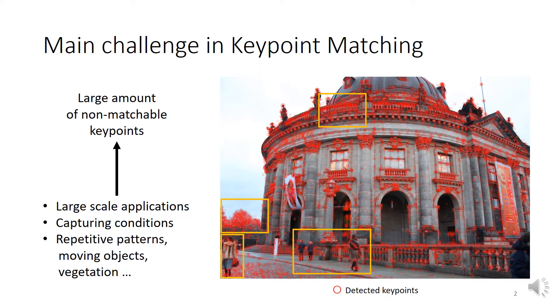These are usually caused by difficult capturing conditions and error-prone areas like those shown in the image, with vegetation, repetitive patterns, moving objects like pedestrians, and homogeneous areas.